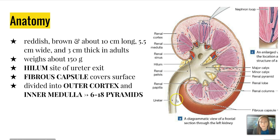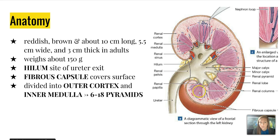The anatomy of the kidney: it's reddish-brown, about 10 centimeters long, 5.5 centimeters wide, and 3 centimeters thick in adults, weighing about 150 grams. The hilum is the site of ureter exit. The fibrous capsule covers the entire kidney, and it's divided into an outer cortex and the inner medulla. The inner medulla is made up of about 16 to 18 pyramids, which are a more purplish color. The tips of those pyramids are called the renal papilla.